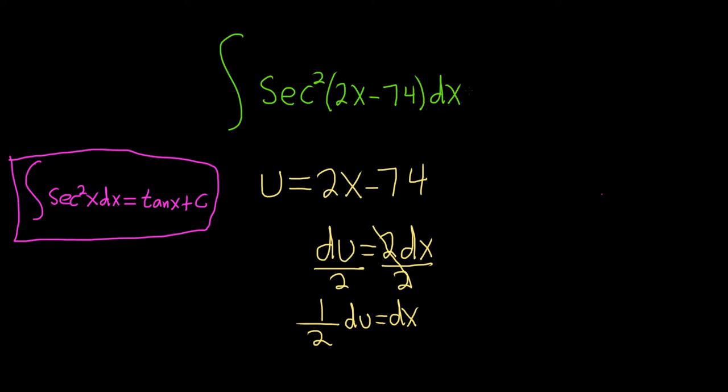Okay. Now we're in a good place. We have dx, and that's equal to 1 half du. So this will be 1 half integral, and I'll put the du over here. And we're simply left with secant squared of u, because u is our inside piece here.